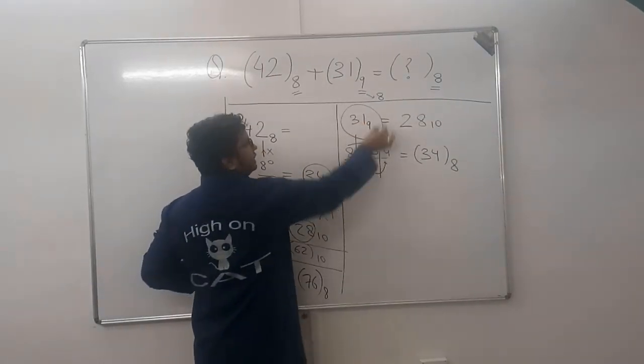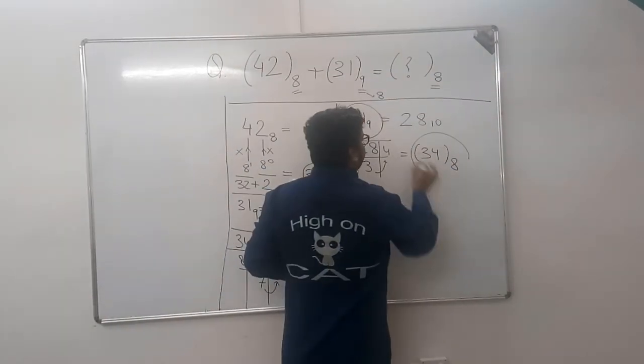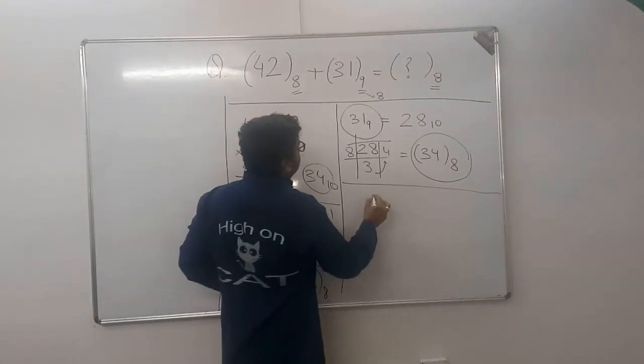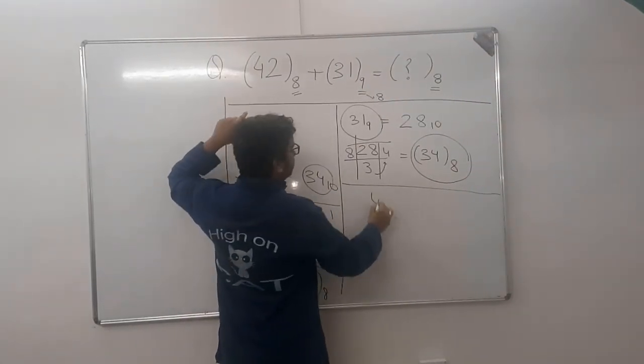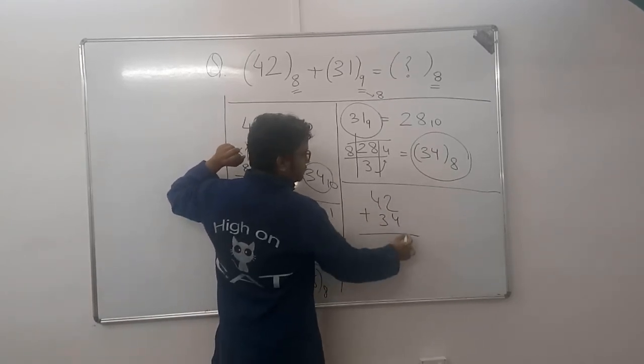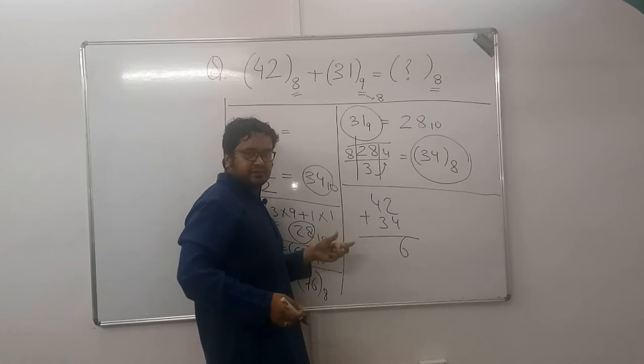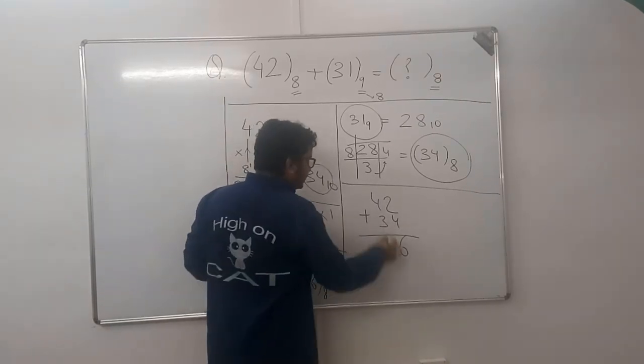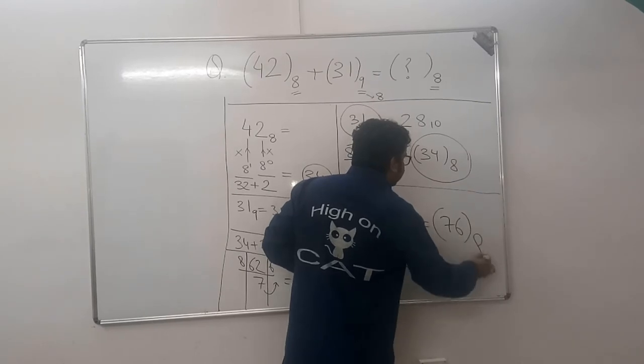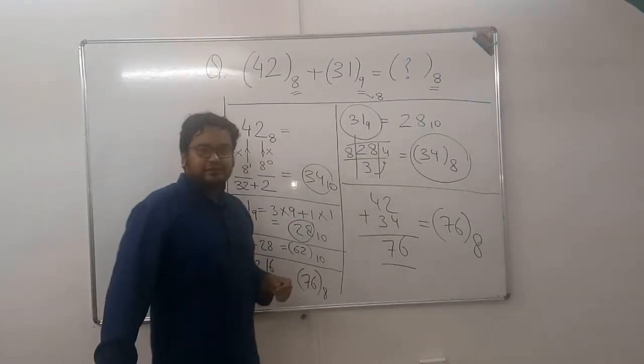So what we have done is converted from base 9 to base 8. Now add in base 8 itself. What are the numbers? 42 plus 34 in base 8. 2 plus 4 is 6. There is no carry. 6 is a digit. 4 plus 3 is 7. 7 is also a digit. So your answer becomes 76 in base 8. Got the logic?